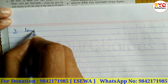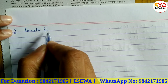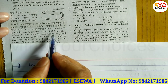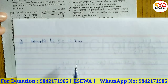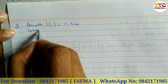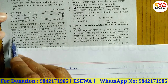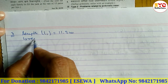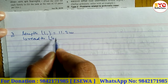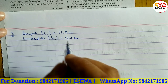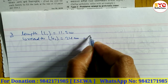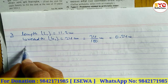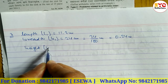For the wall dimensions: length L1 is equal to 11.2 meters, breadth B1 is equal to 24 cm — converting to meters, that is 24 divided by 100, so B1 equals 0.24 meters. Height H1 is equal to 7 meters.